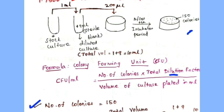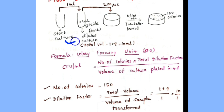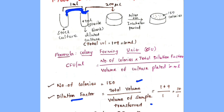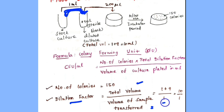Next, we calculate the total dilution factor. In this problem, only one dilution was made. From the stock culture, 1 ml was taken and added to a test tube containing 9 ml of sterile blank. The dilution factor equals total volume divided by volume of sample transferred, so that is 1 plus 9 equals 10 ml, divided by 1 ml, giving a dilution factor of 10.